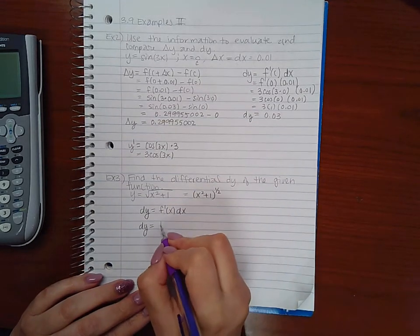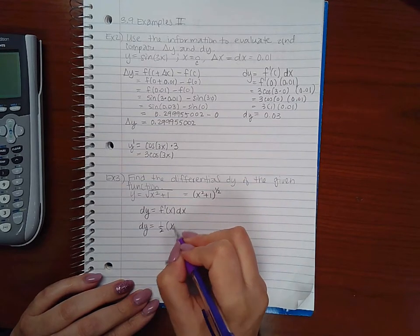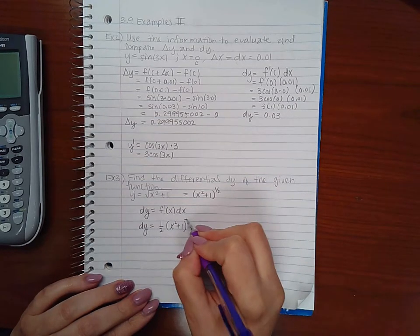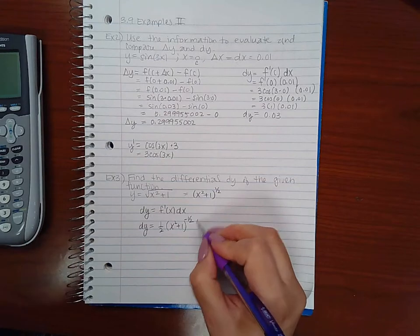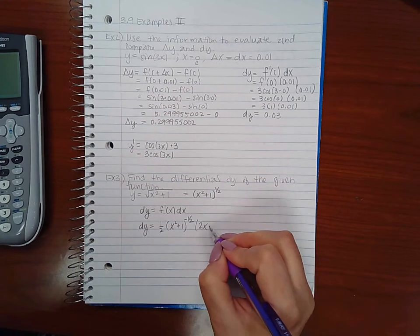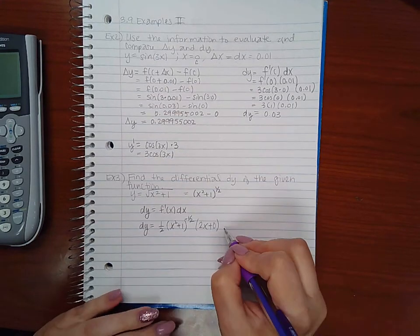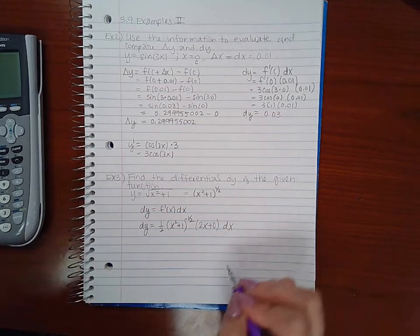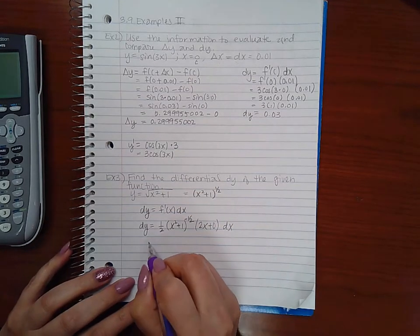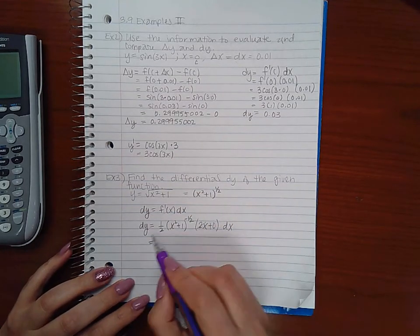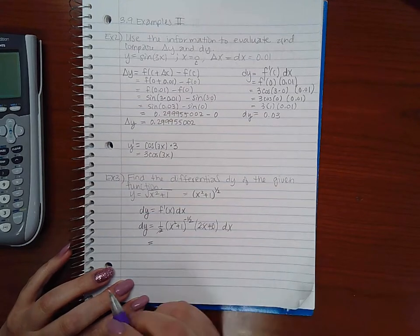And so the derivative of that would be 1 half x squared plus 1 to the negative 1 half times the chain rule which is 2x plus 0. And I still have this dx multiplied by it. Then this 2 and this 2 will cancel because the 0 is not even really there.